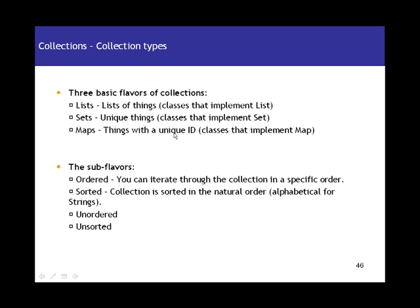Maps are things with a unique ID — they're a name-value pair implementation. So I can say the student role number is the unique key (the name), and the corresponding value is the student object for that role number. I can define different name-value pairs. That's the difference between maps and lists/sets — maps are not just a list of things but key-value pairs.